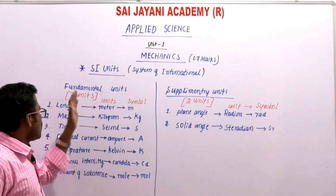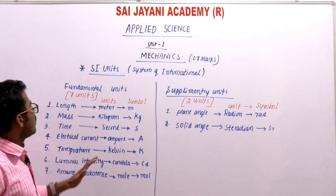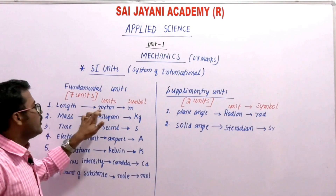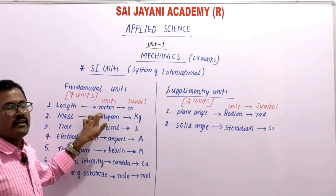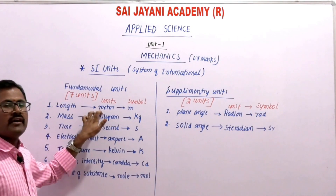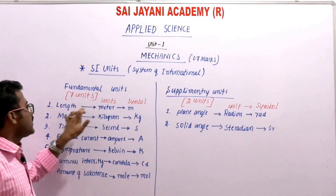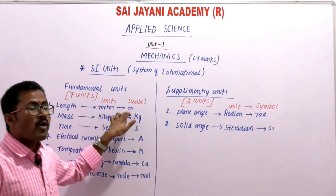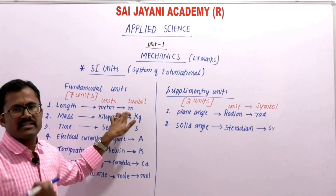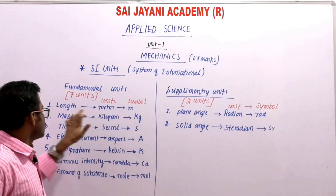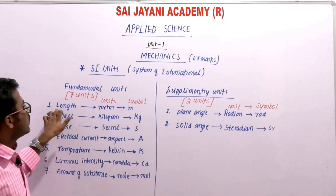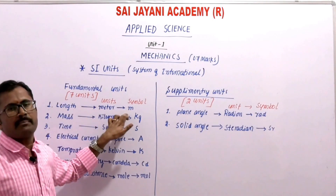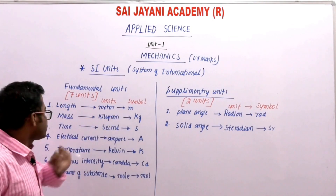Now, what are the units of these seven fundamental quantities? For length, the unit is meter. The SI unit of length is always meter, represented by the symbol small 'm'.